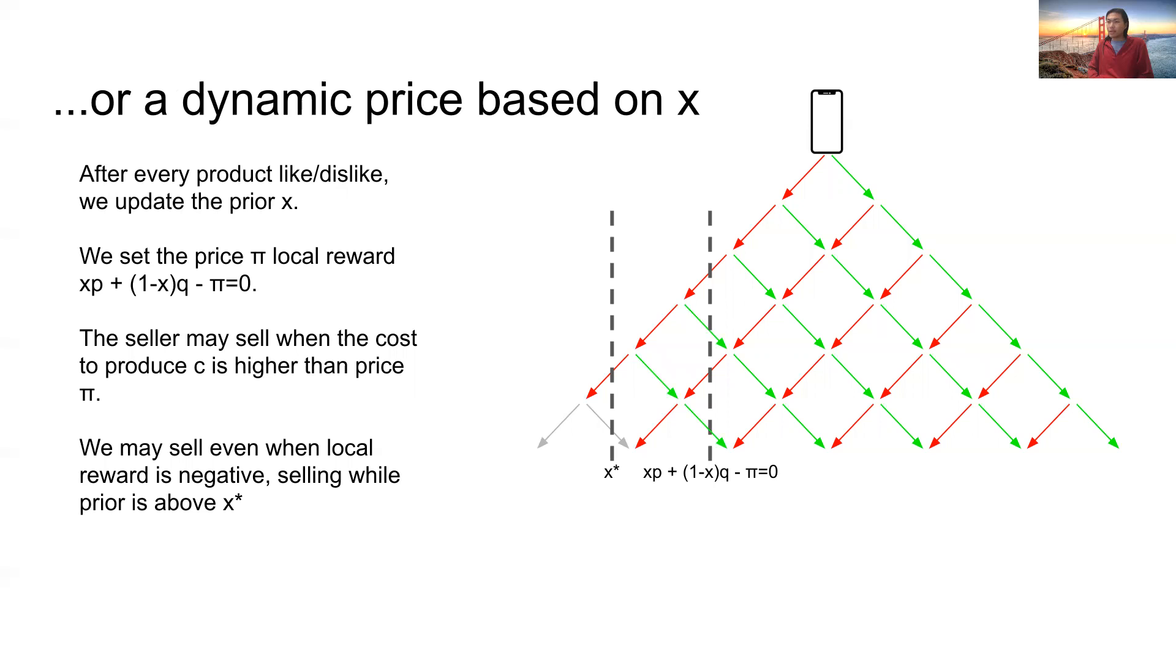The seller, interestingly though, may continue selling the product, even when the cost to produce the product C is higher than the price pi. We prove that we continue selling up until a point X star, where this prior X star is lower than the X such that the local reward is zero.